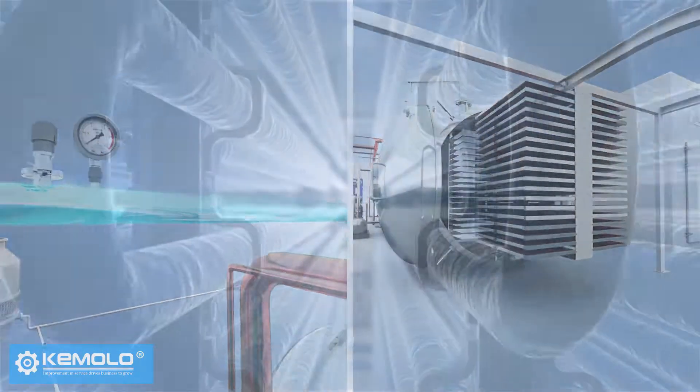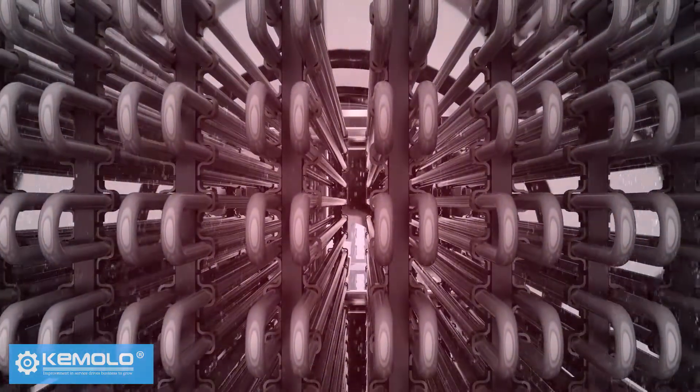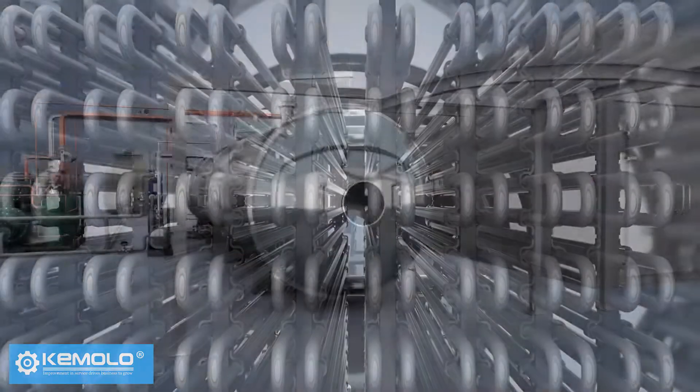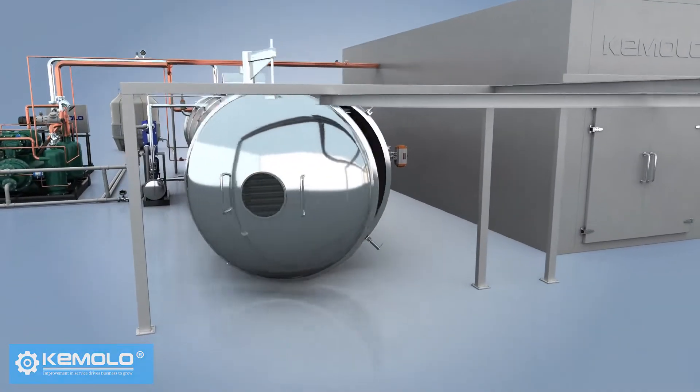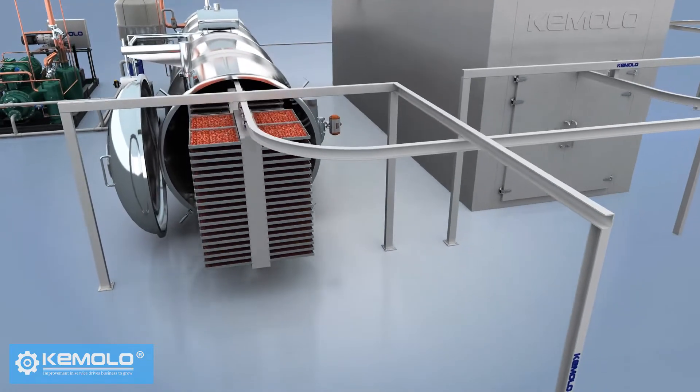After discharging, the frost on the water vapor collector needs to be defrosted for the next batch of production. Therefore, the freeze drying must be produced in batches and the interval between each batch is about 1-2 hours.